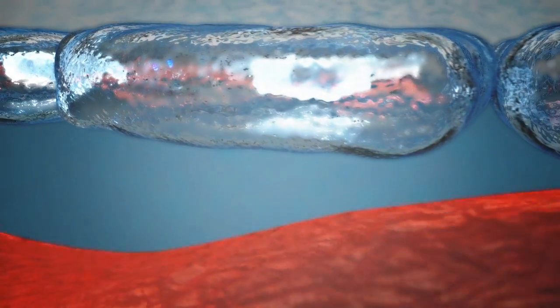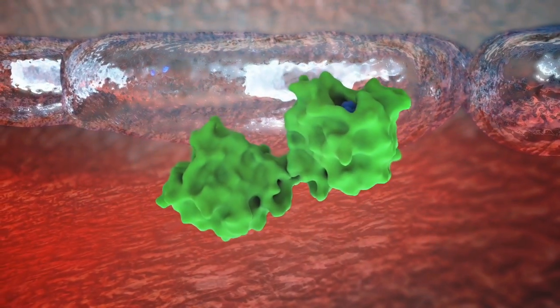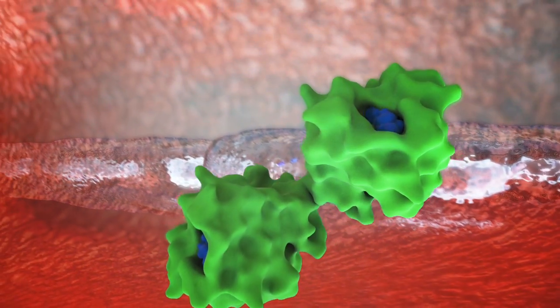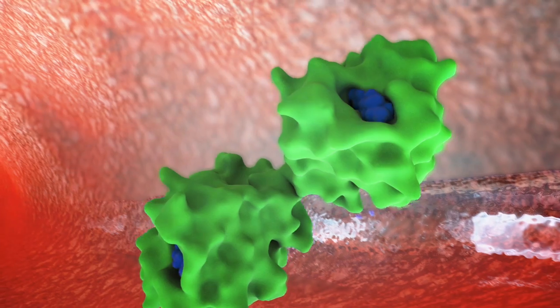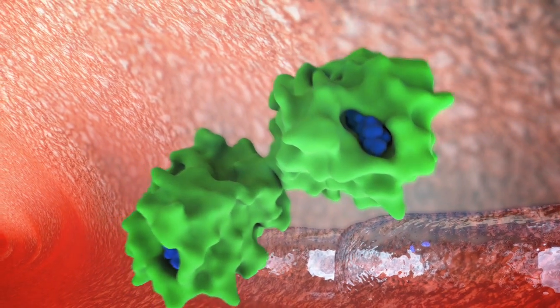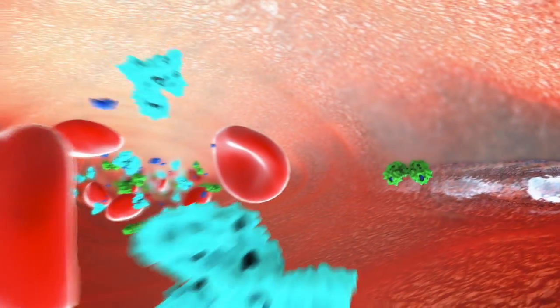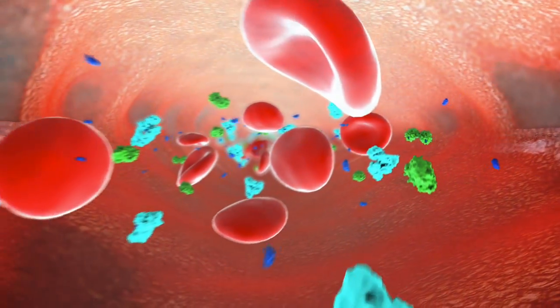The testosterone attached to SHBG is not able to enter the cell due to the strong bond between the two molecules and is not considered bioavailable. Testosterone attached to SHBG is basically trapped within the bloodstream and remains there until it is broken down by the body.